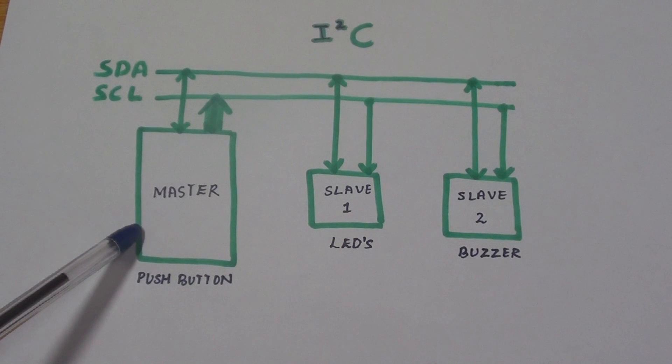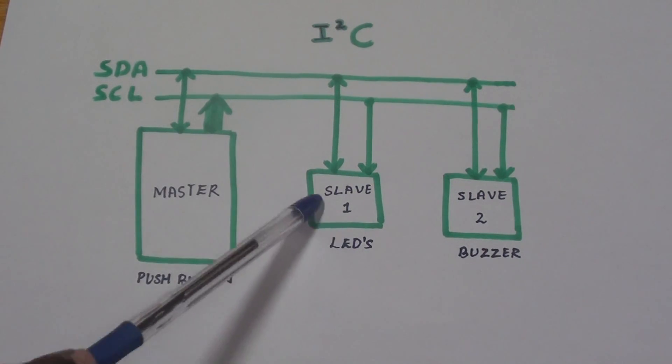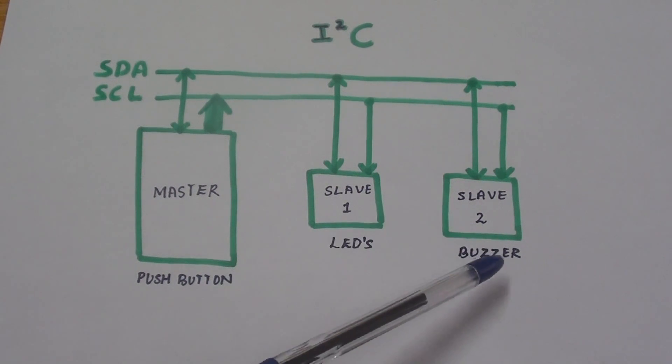Here the master Arduino board is interfaced with push button. Arduino slave 1 is interfaced with LEDs. Arduino slave 2 is interfaced with buzzers.